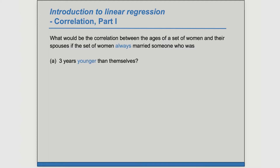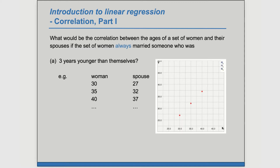The word 'younger' might make us think it's going to be negative. But if we set up a table, we can see better what is going on. If the woman is 30, the spouse would be 27. If the woman is 35, the spouse would be 32. So even though the spouse is always three years younger, as the woman is older, so is the spouse. That means it's positive correlation, not negative. We could graph these data points and confirm the correlation is positive. Because it's a perfect positive correlation, R equals positive one.